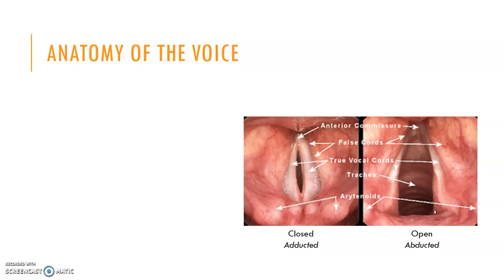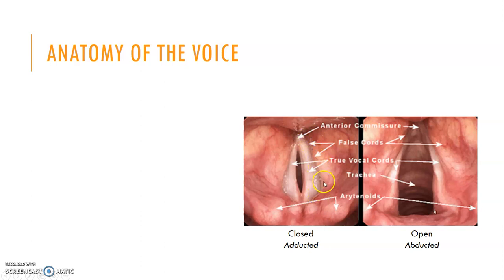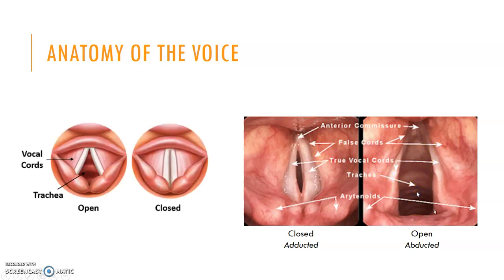Now we can look at what the real vocal folds look like — an image through the nose and pharynx looking at the top of the larynx. The front of the larynx is here; touching the front of your throat, you would be just in front of this area. The back shows the arytenoids on either side as lumpy structures. The vocal folds are this thin band of tissue, with the false vocal folds sitting just above — more important for swallowing, or in a dysfunctional voice. When the vocal folds are open, we can see the trachea; when they're closed, we cannot.